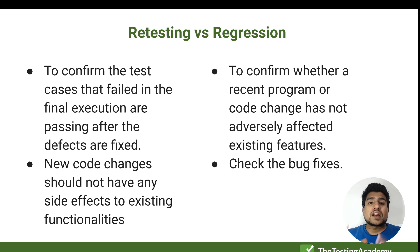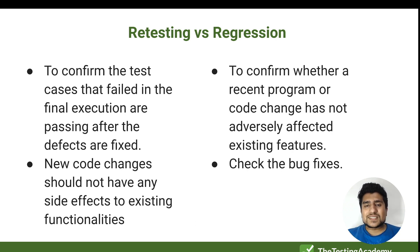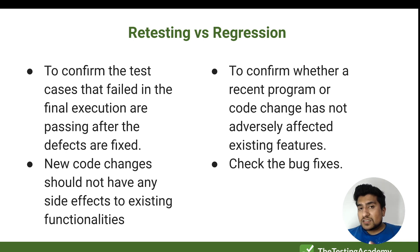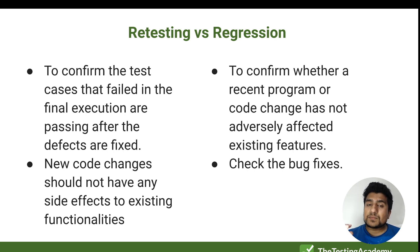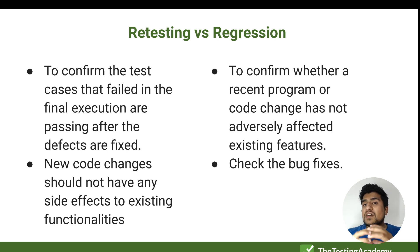Now the major difference between retesting and regression — this is a question that comes up a lot in interviews. Retesting is done to confirm that the test case that failed is now passing after the defect is fixed; we are testing only the part where the defect exists. Regression is to confirm whether recent code changes have affected the remaining functionality. Retesting is done on the fix to a specific bug, whereas regression checks bug fixes as well as old functionality that may have been impacted.